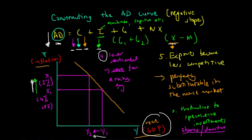Conversely, if inflation were to decrease from PI2 to PI1, we will exhibit an increase in real GDP or income.